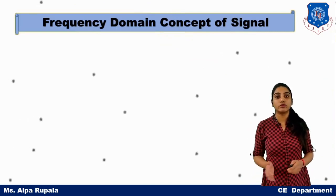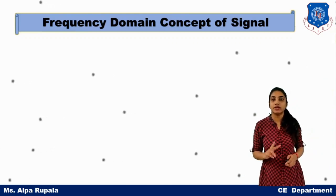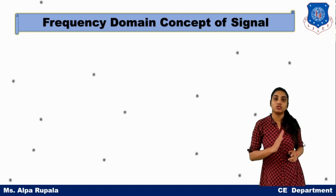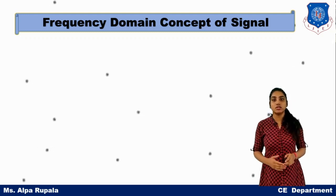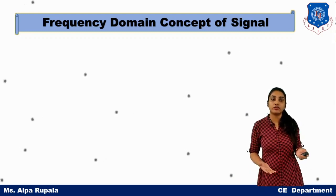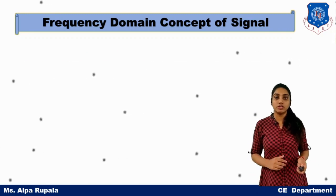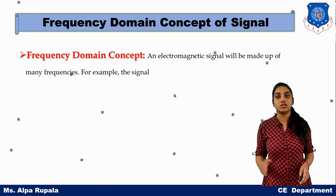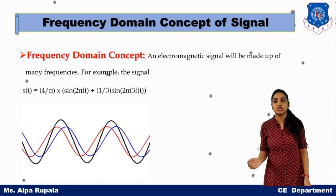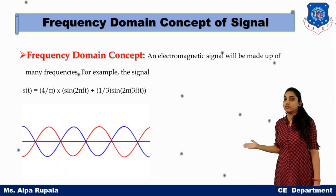The next topic is the frequency domain concept of a signal. If we talk about the domain representation of a signal, there are basically two domains: time domain and frequency domain. We have already learned time domain. The frequency domain is very important because in real life, the main concept of a signal is represented in the frequency domain. In frequency domain, the signal is represented as a multiple frequency combination signal — you have multiple signals with different combinations of frequencies.